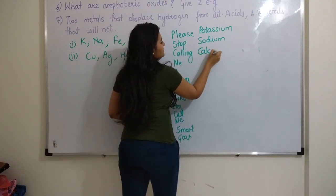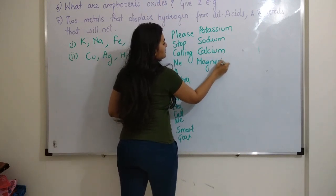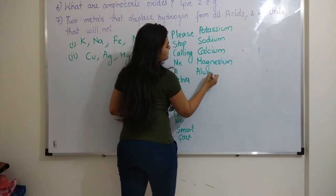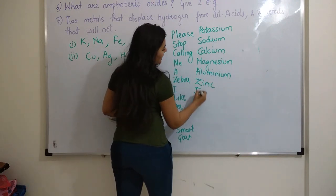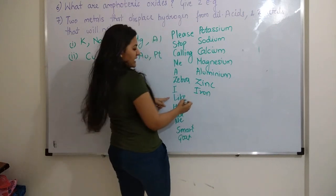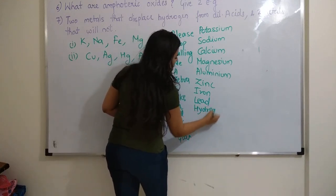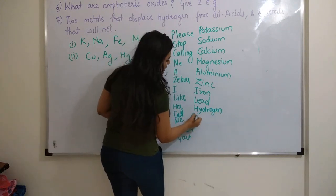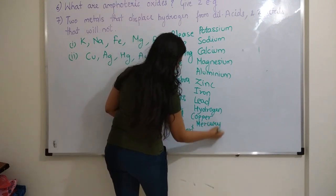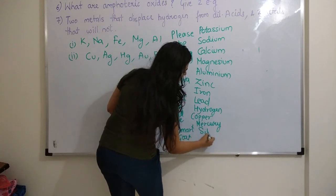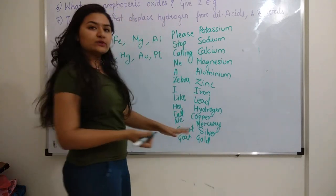C for Calcium, M for Magnesium, A for Aluminium, Z for Zinc, I for Iron, L for Lead, H for Hydrogen, C again for Copper, M for Mercury, S for Silver, G for Gold. Then comes Platinum, which you can write. The last one is Platinum. Remember all these.